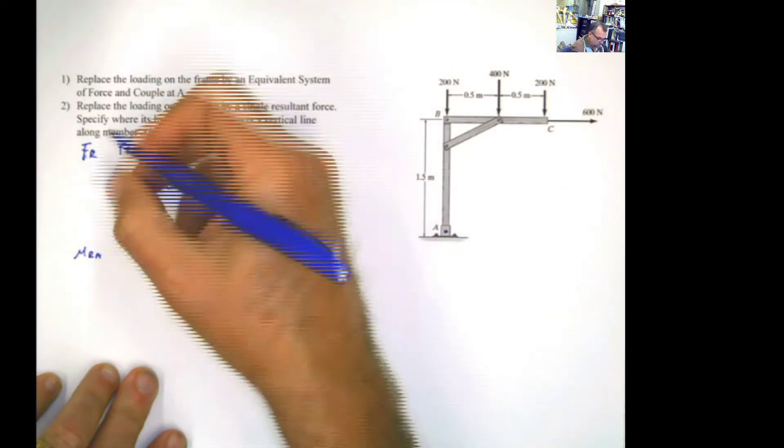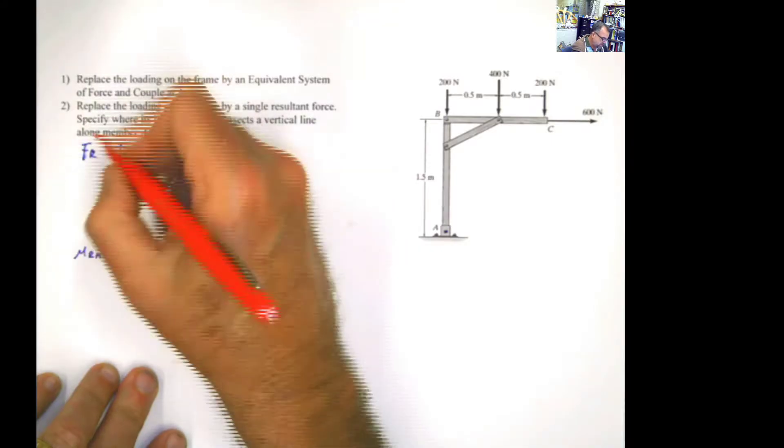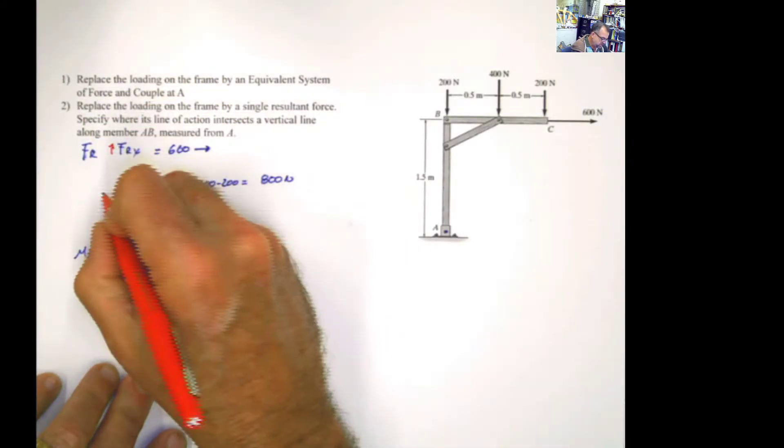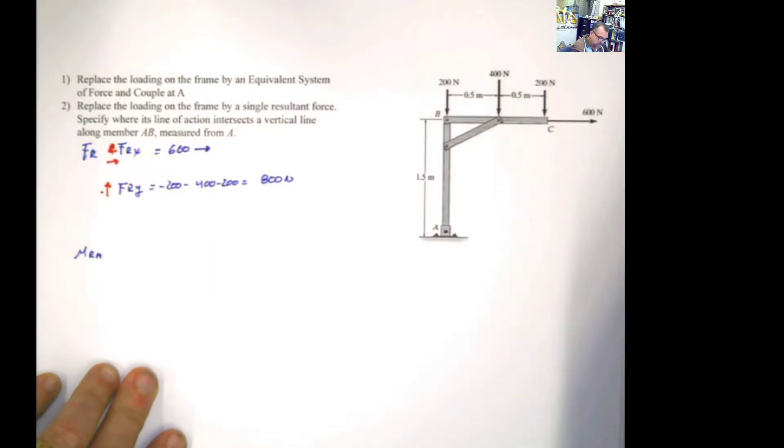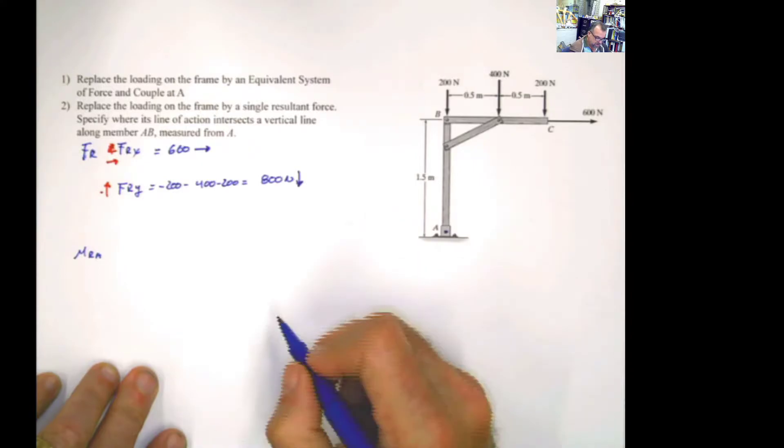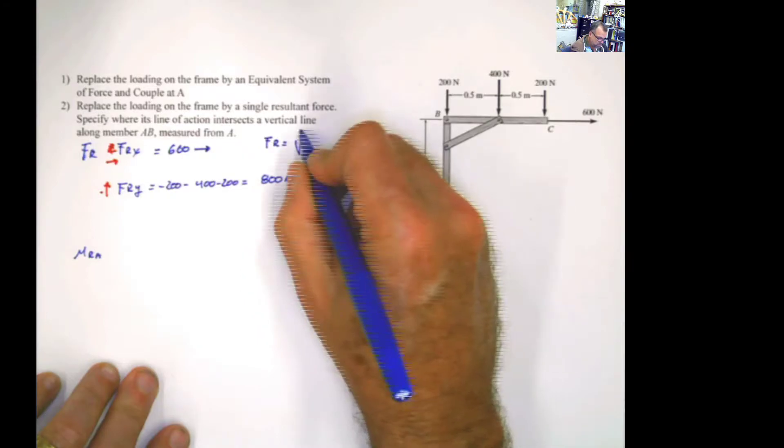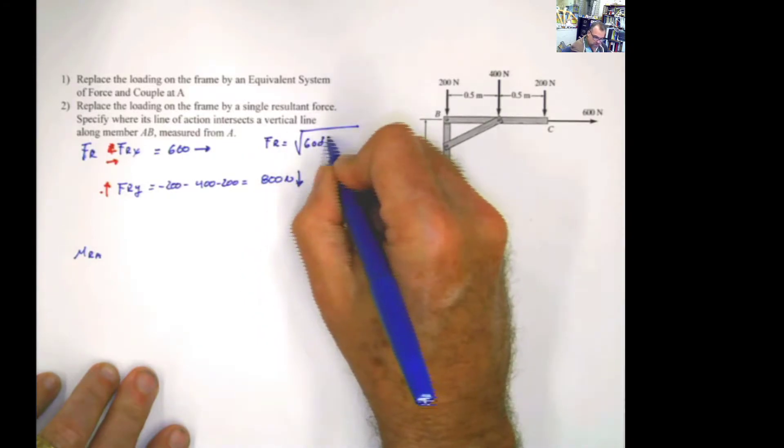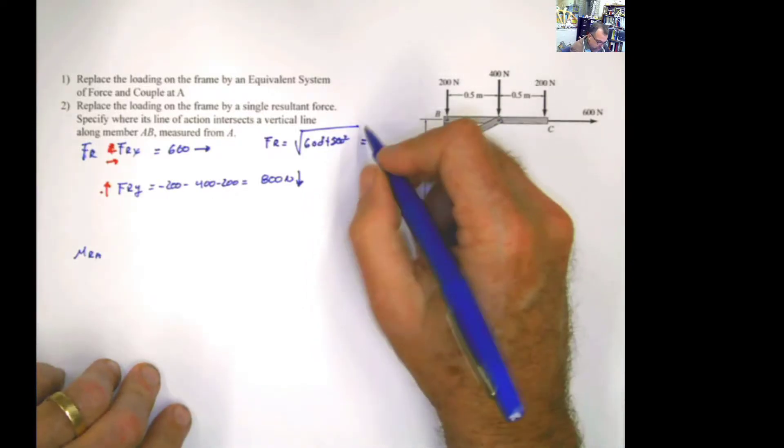And because when we do it, I don't copy it here. But when we do it, we said that this is going to be positive. And we said, this is going to be positive, and this is going to be positive. Because I get a negative sign, but that means that it's acting downward. Once you have these two, you can calculate the resultant force by doing square root of 600 squared plus 800 squared.